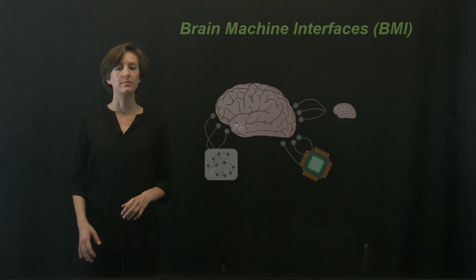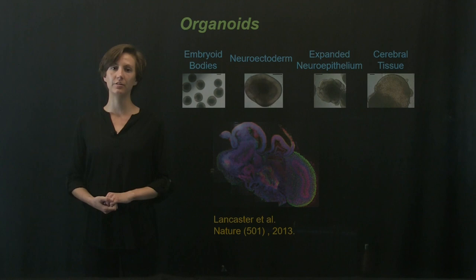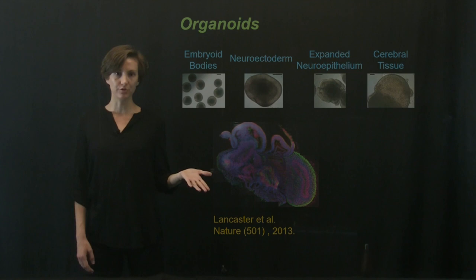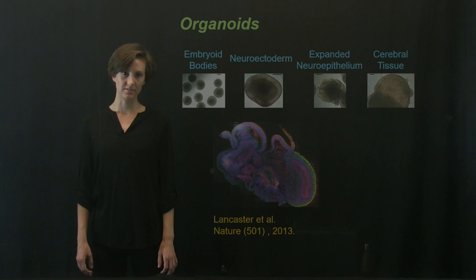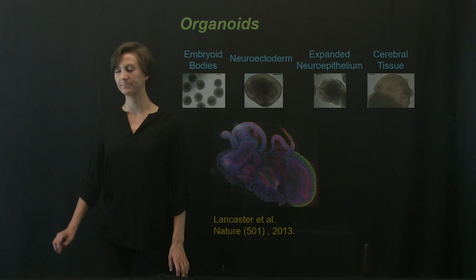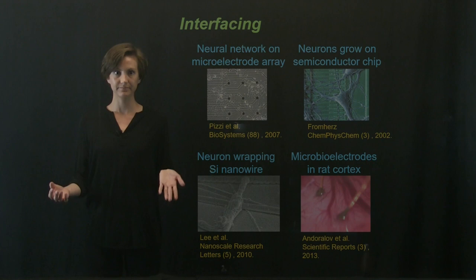Swelling in axons either blocks or distorts signals traveling down the axon and disrupts communication in the brain. Damage in the brain may be able to be counteracted through brain-machine interfaces, which could take the form of an artificial neural network, a chip, or an organoid. Researchers have been able to grow cerebral organoids from stem cells. This cerebral organoid progressed through the stages of neurodevelopment in a matter of days, and the resulting organoid had specialized neurons as well as distinct brain regions that were, of course, underdeveloped. There are a variety of ways in which we can interface with a biological neural network on both the macro and micro scale.